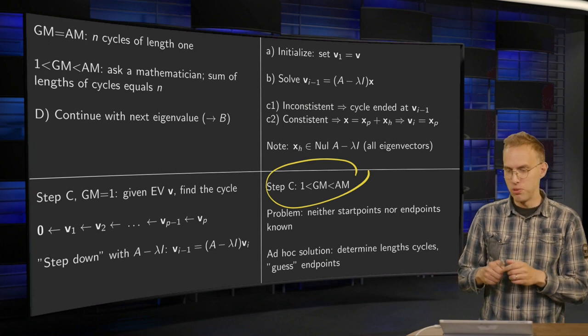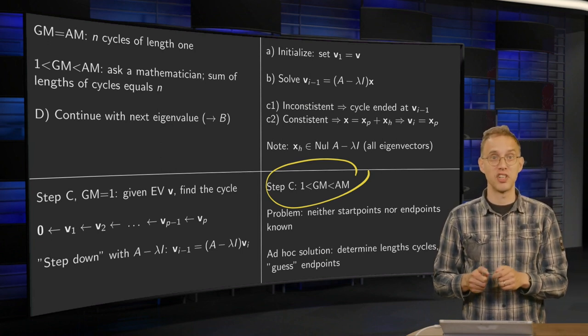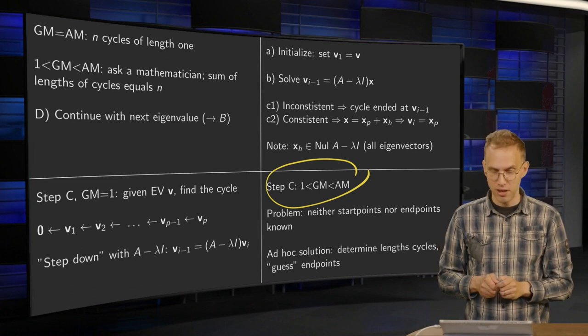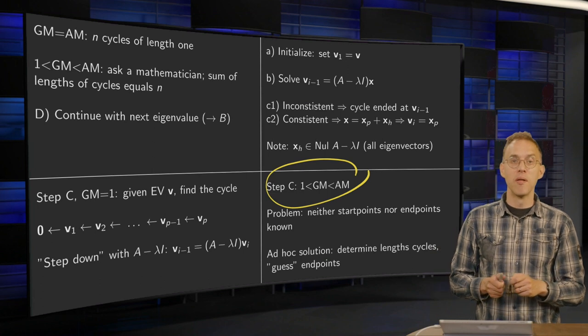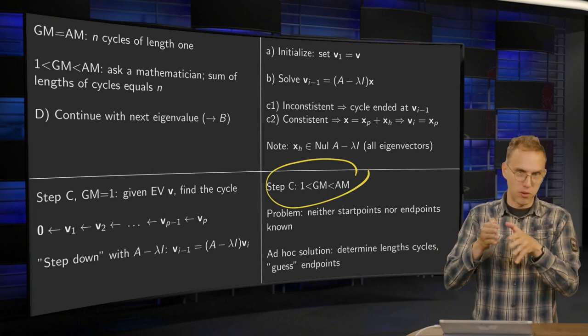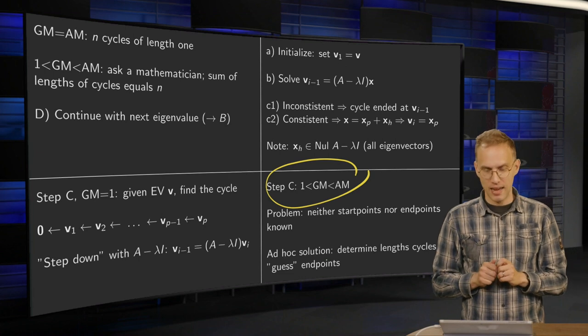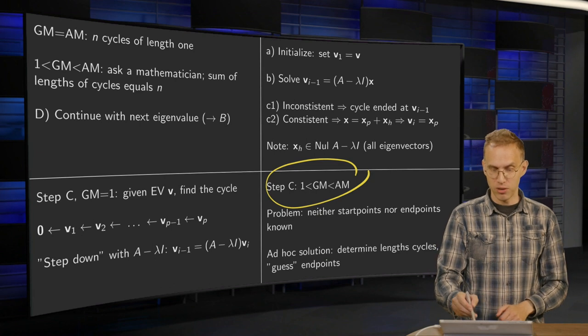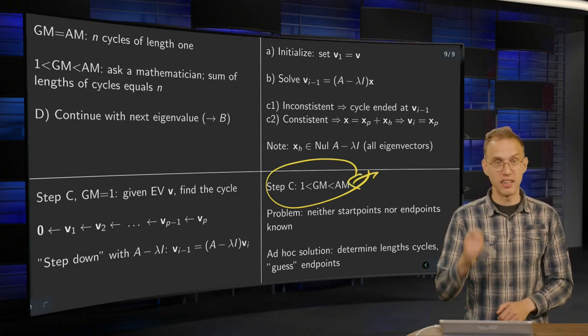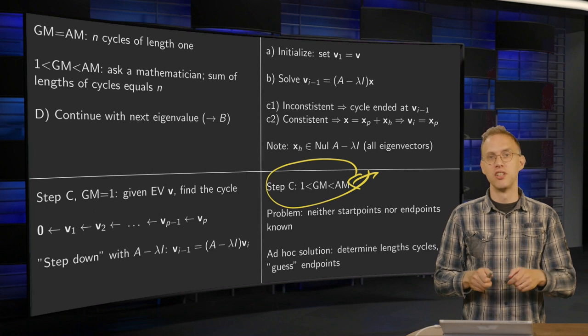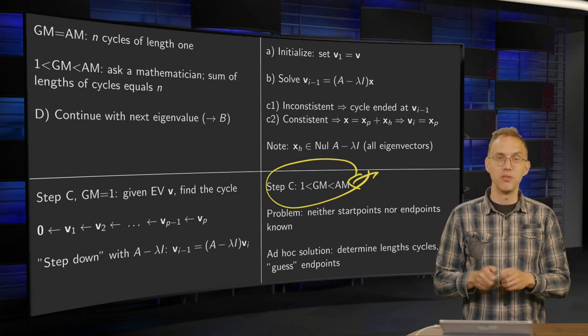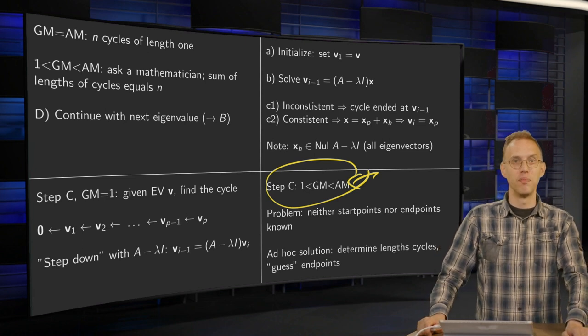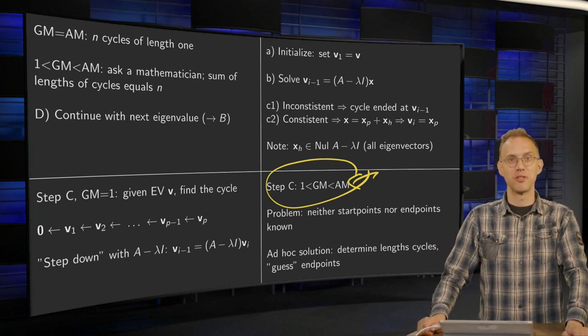So an ad hoc solution is, well, okay, first you determine the length of the cycles and guess the endpoints. And in this way you can fiddle around, which you see I call an ad hoc solution. So in general, this is a pretty annoying and difficult case. Fortunately, in order to construct this case like this, you need very big matrices. So in most computations we'll do, most examples we'll have small matrices, so you don't have to worry about big and annoying examples. Okay, then we'll slow down. We'll be right back.